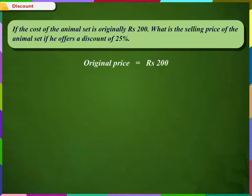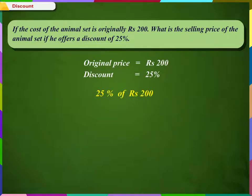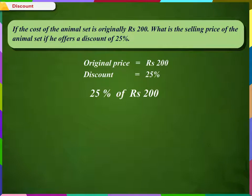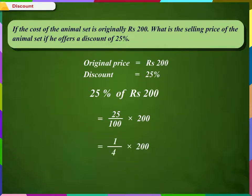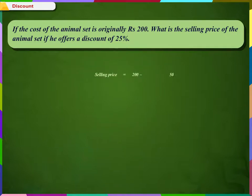In this problem, the original price is Rs. 200 and the discount offered is 25%. Firstly, we need to find the discount percent of the original price. So, 25% of Rs. 200. We have already done this kind of problem in our previous class. Let us find 25% of Rs. 200.